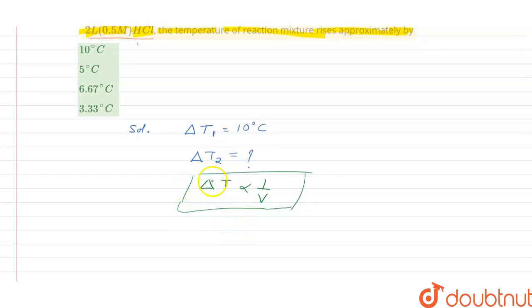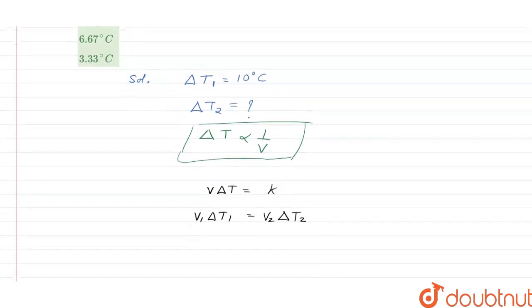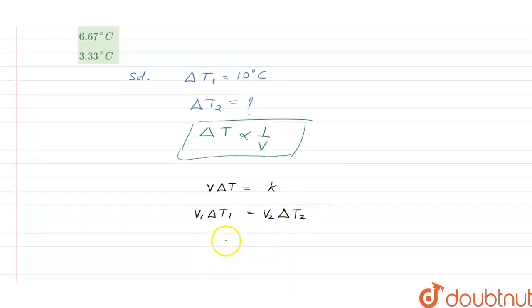We can write that V times delta T would be equal to a constant. If it is equal to a constant and we are considering the two cases, then we can write it like this: V1 times delta T1 equals V2 times delta T2. By writing this, we can calculate the delta T2 value.